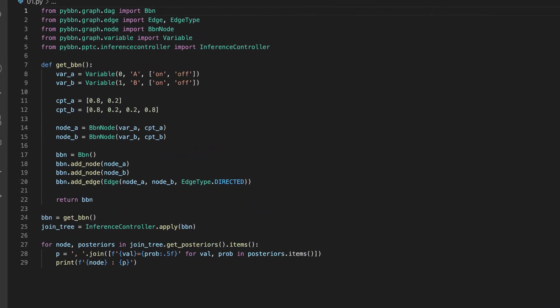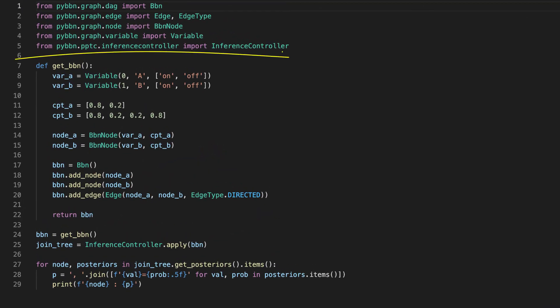In this code, I have to create a join tree from a Bayesian network. I've abstracted away creating the Bayesian network. It's the same code as before, but placed in a function. To get a join tree, I simply use the apply method from the inference controller. Lastly, here's a code snippet to get the posteriors to observe the state of each node.